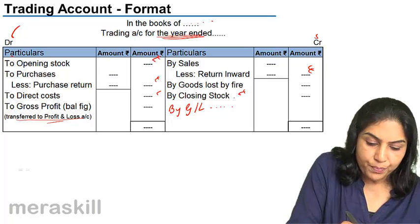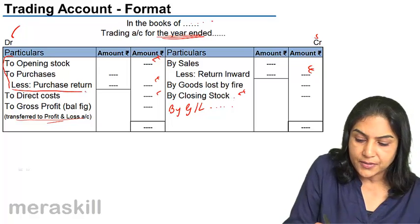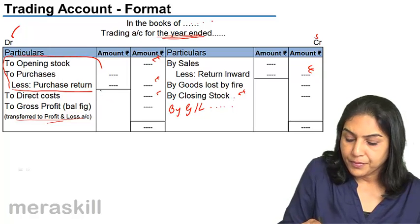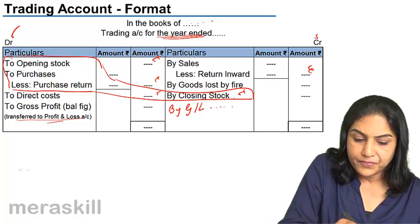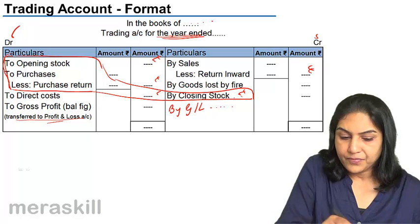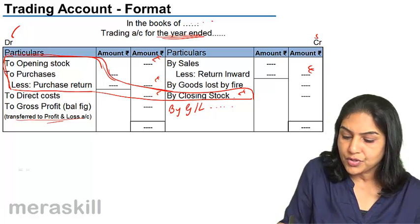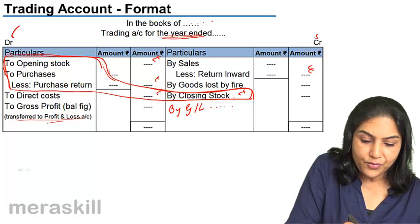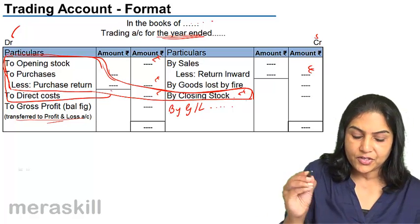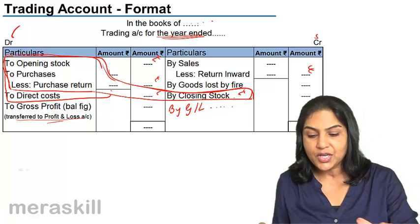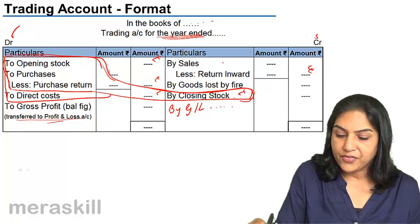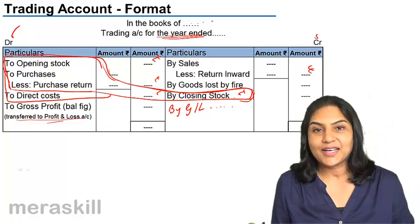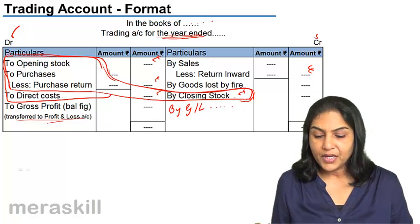So to summarize: opening stock plus purchases minus closing stock, plus direct costs — this represents the cost of goods sold. On the credit side we have sales. Sales minus cost of goods sold gives us gross profit, which is exactly as we had discussed before, presented in account form.